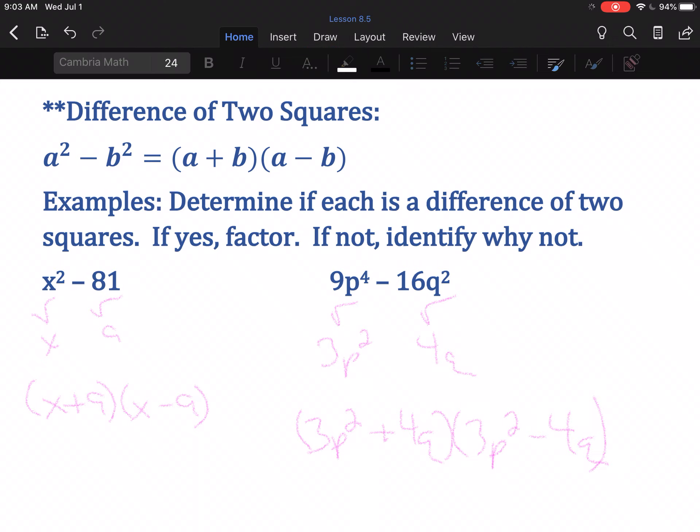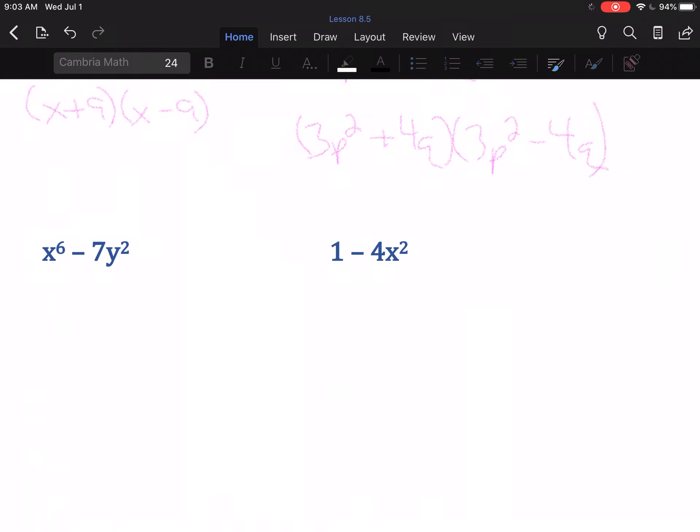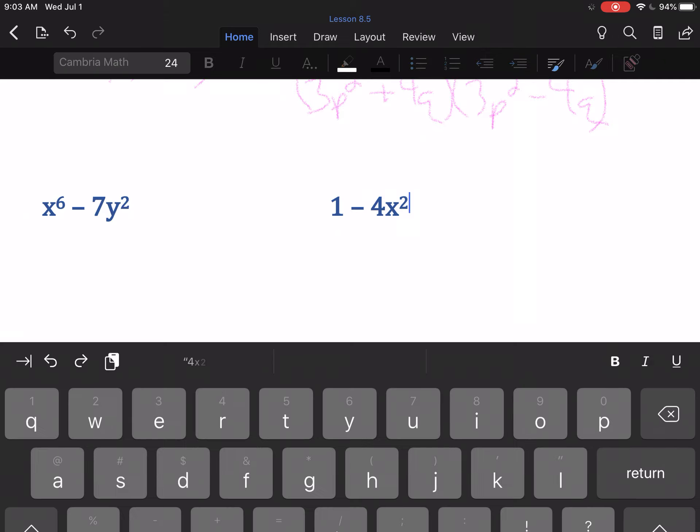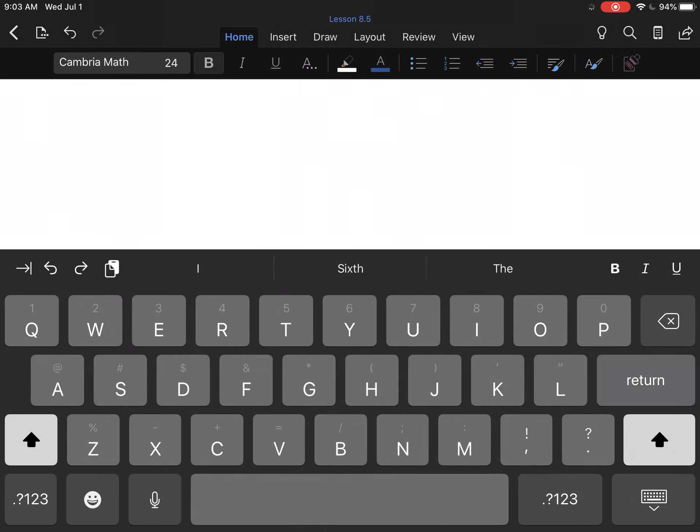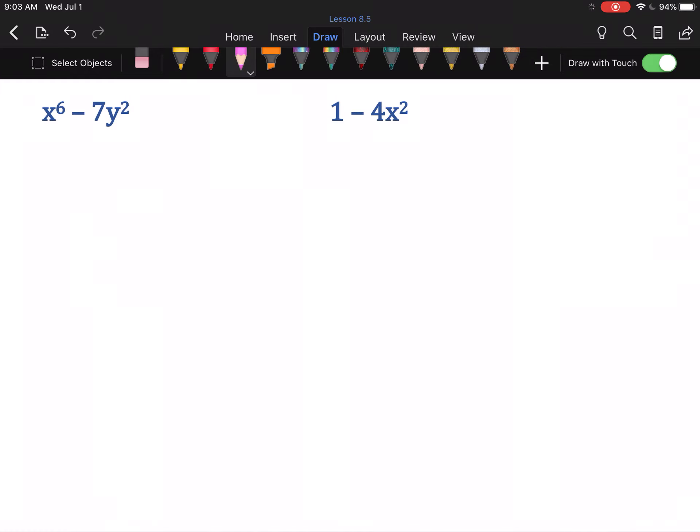This is just validating that the pattern holds and then throwing out an answer. Next term. Square root of x⁶. x⁶ is even, so it's half of the exponent, so it's x³. Square root of 7y². Uh-oh. Square root of 7 is a problem.